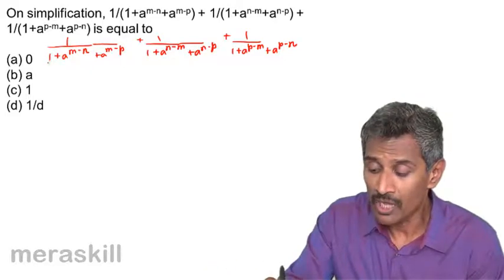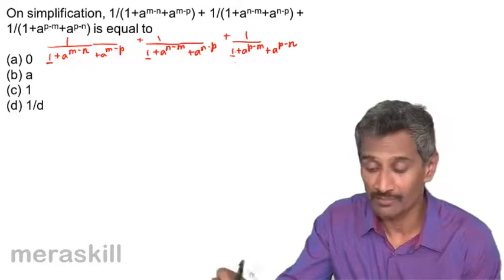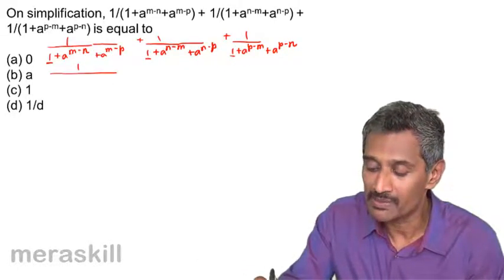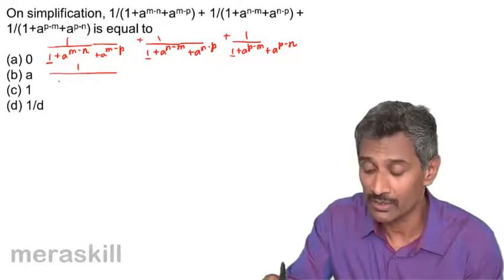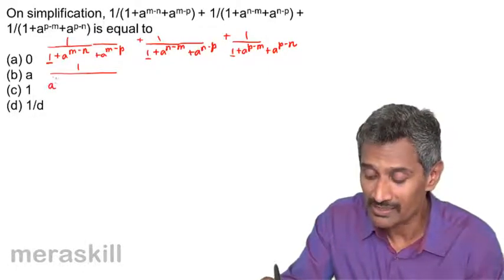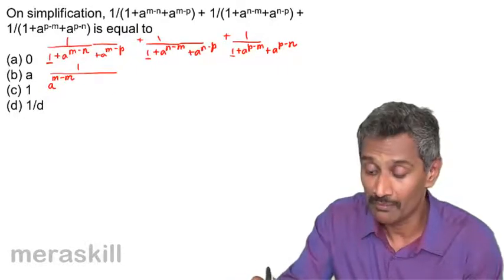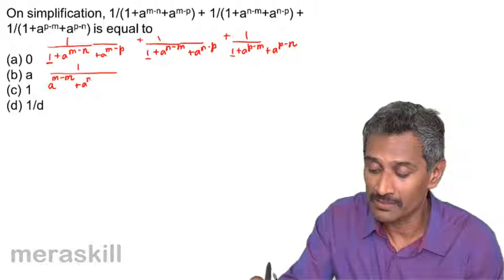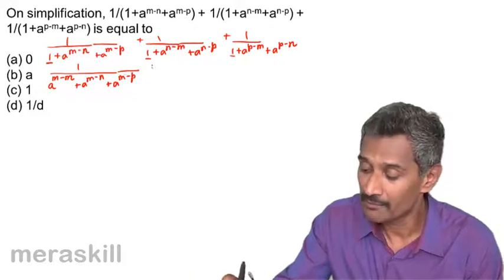So our focus is going to be on the denominator. We can write this one — since m is repeated here — as a raised to zero, and that a raised to zero can be written as a raised to m minus m. In the further steps we'll understand why, because we're going to take out a raised to m as a common factor.